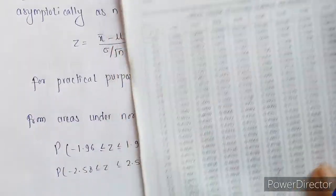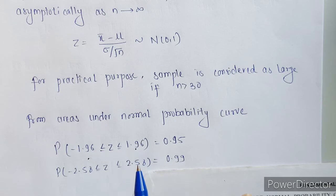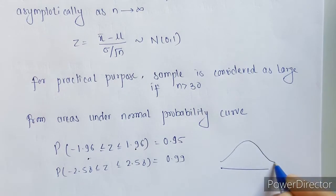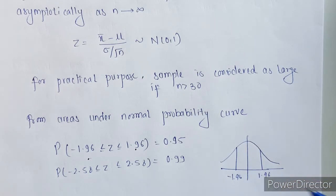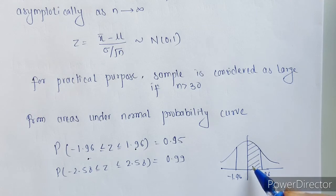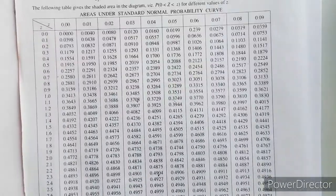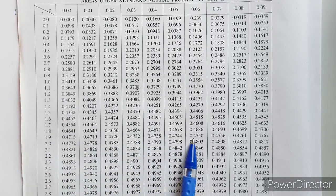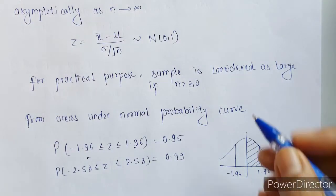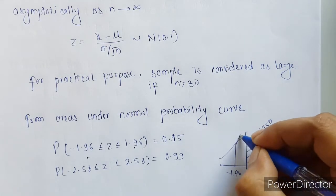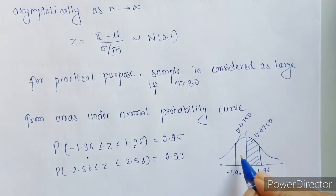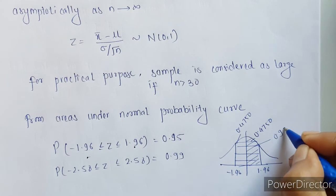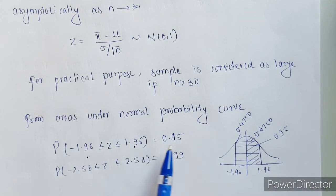This is our table. The area between minus 1.96 and plus 1.96 — since we have only right-hand side values, let's calculate this and then double it, since both values are going to be the same. The area from 0 to 1.96 is 0.4750, and again this will be 0.4750. So the entire complete area after adding both will be 0.95.